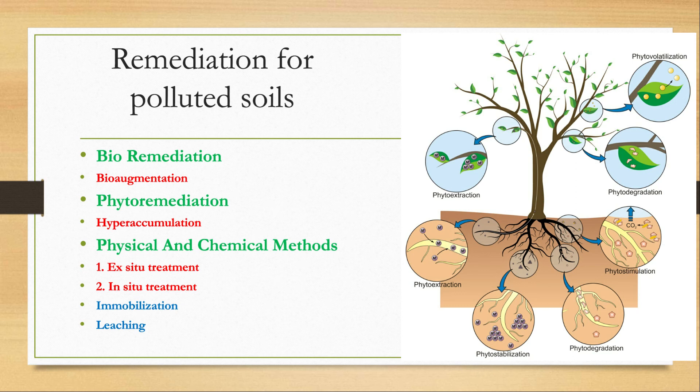Plants either accumulate pollutants in their biomass or volatilize them into the atmosphere — this is called phytovolatilization. Plant roots also create compounds that stimulate microbes to speed up the degradation process, which is called rhizosphere phytoremediation.